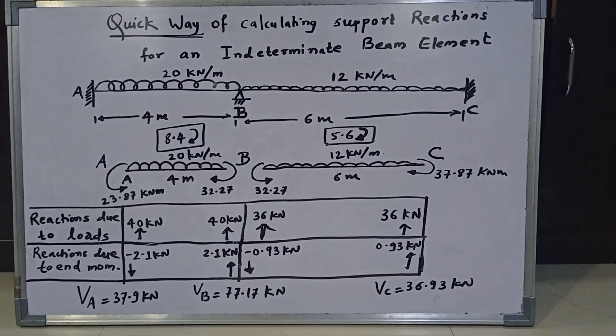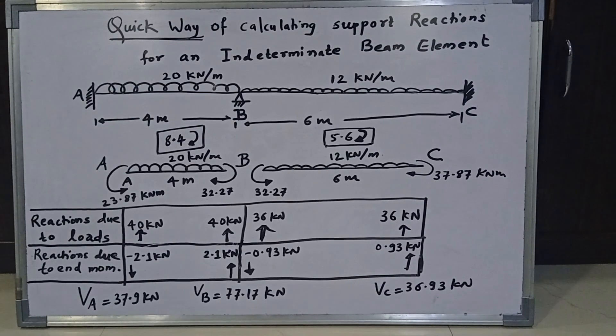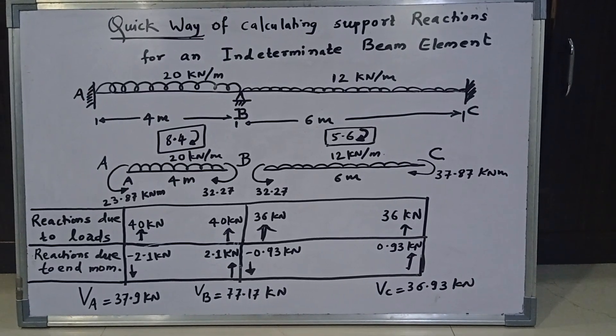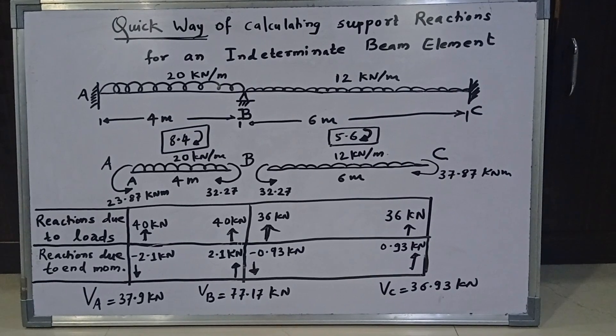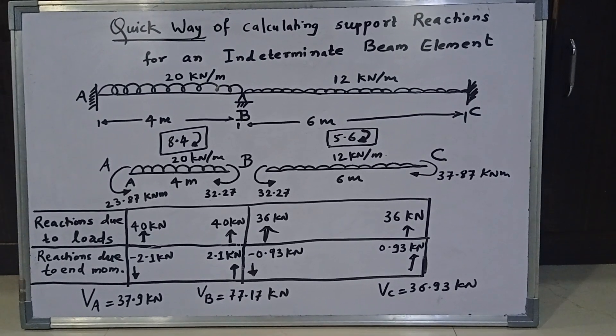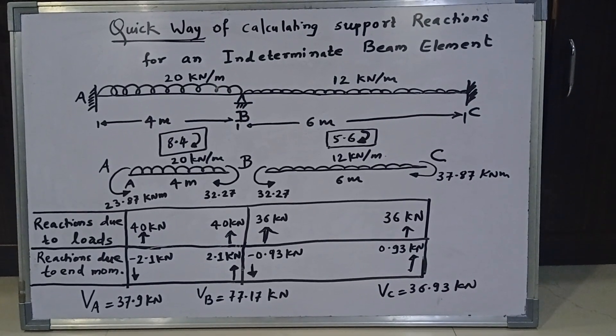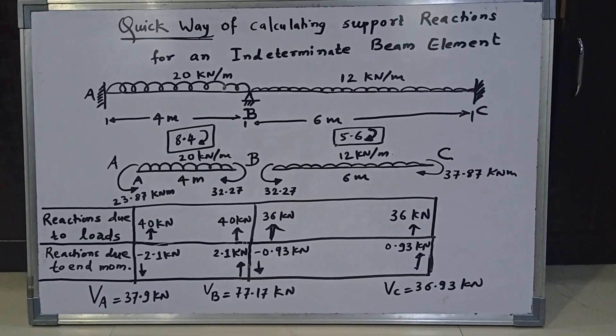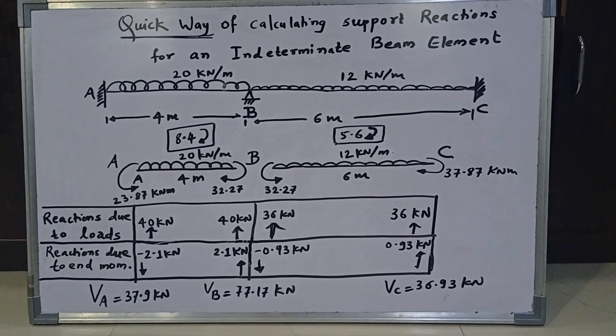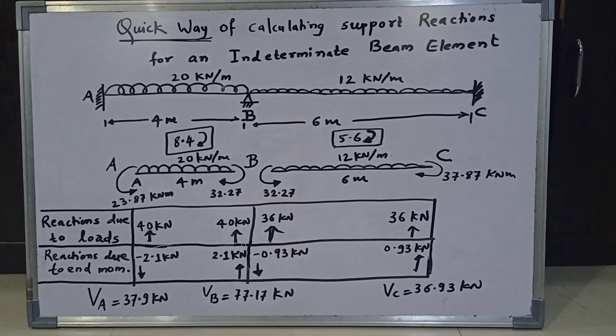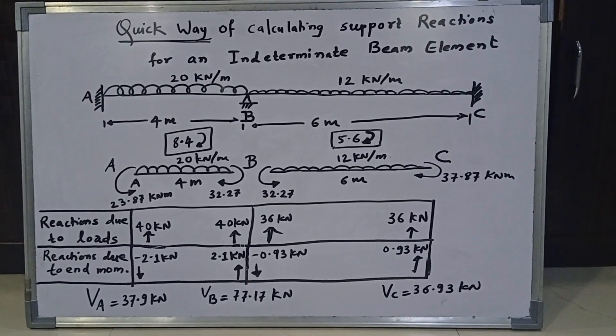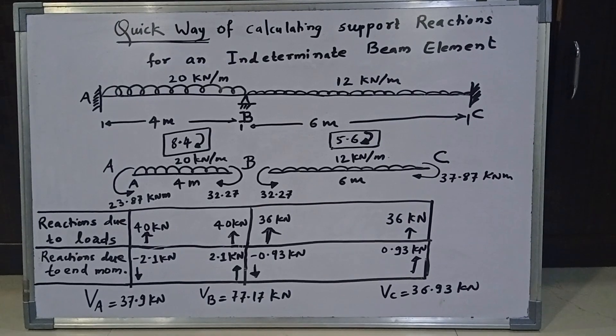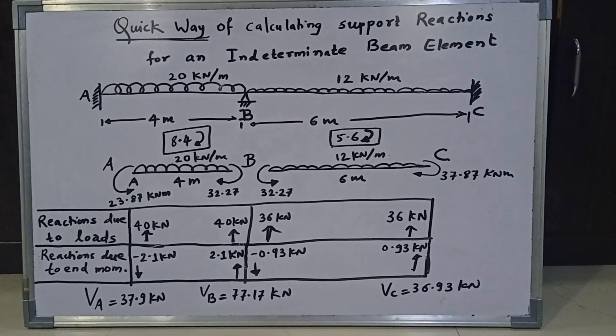For that what I have done is let us look at the table. So first is reactions due to external loads only. So let us see the first row in the table. Now forgetting about end moments for a while, let me only consider the external loads. So first I will take span A-B as a separate simply supported entity. We know that the load on span A-B is 20 kN per meter. It is acting for 4 meter. Therefore, the total net downward load will be 20 into 4, that is 80 kN.